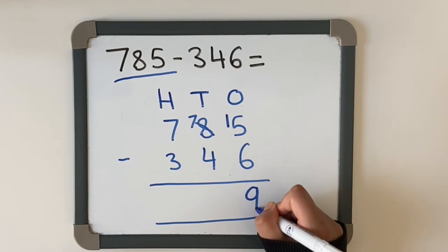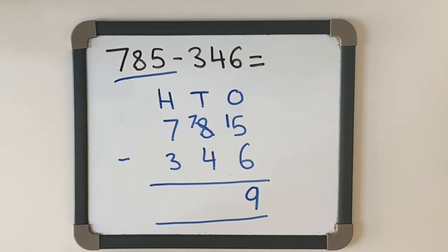Then we're going to do 70 take away 40: 70, 60, 50, 40, 30.